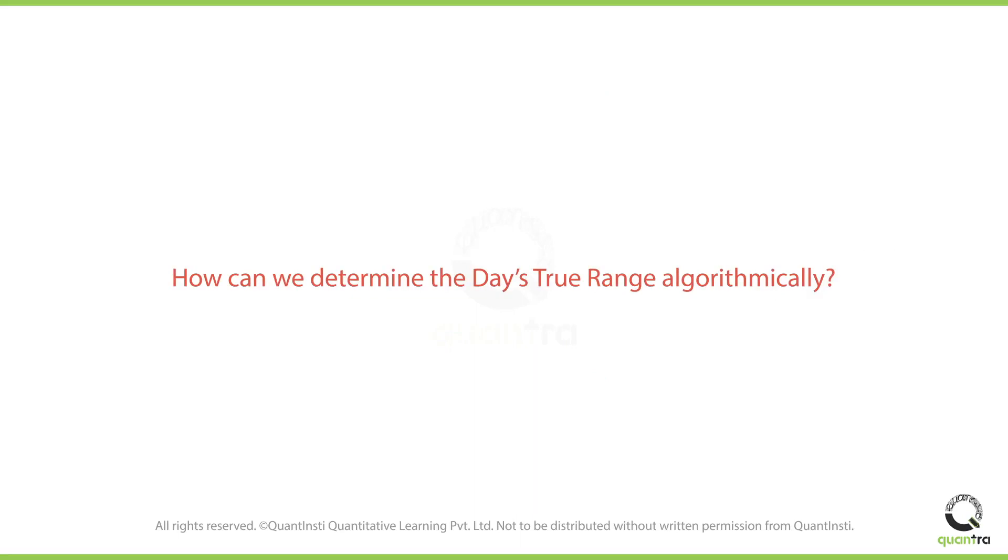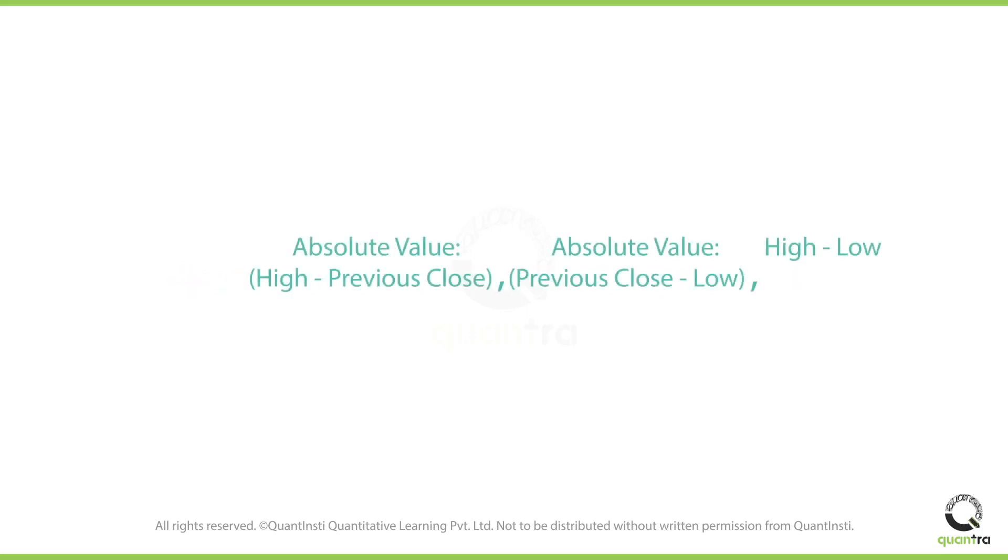But how can we determine the day's true range algorithmically? We can achieve this by simply computing the values for all these three cases. The greatest value among these would be considered as the accurate true range value for the given day.